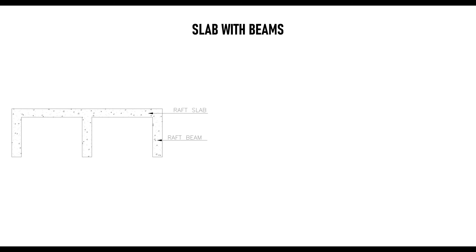There are two major orientations for the slab with beams. The first is the downstand alignment, where the top of the beam and the top of the raft slab are in alignment, with the beam going downward from the top of the slab to the favorable depth as prescribed by the geotechnical report.